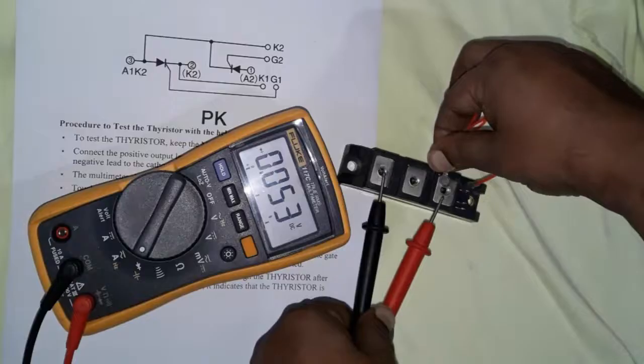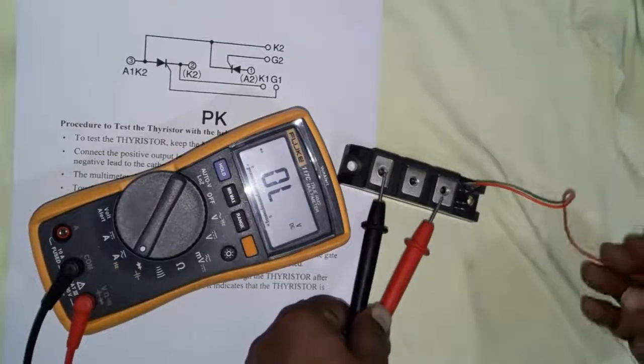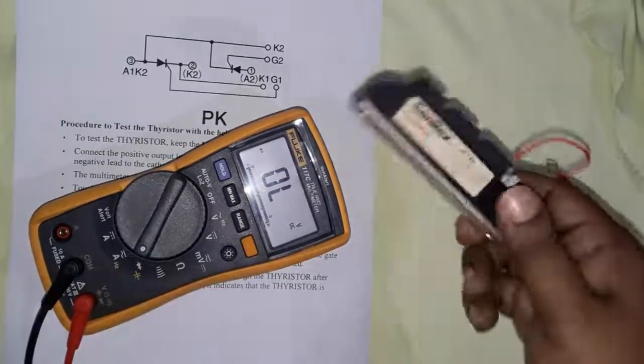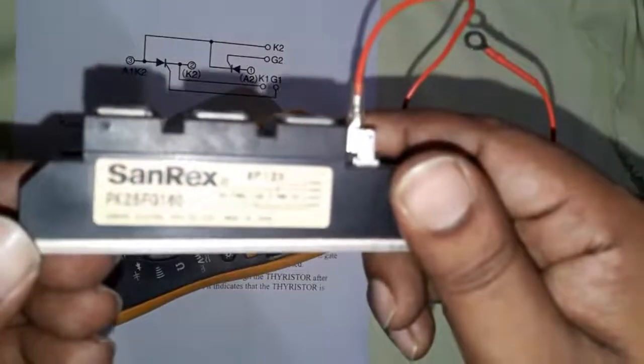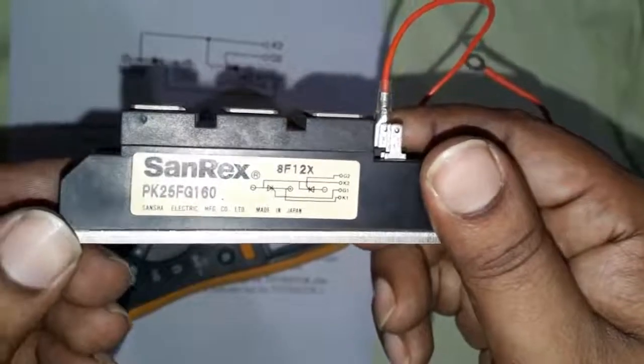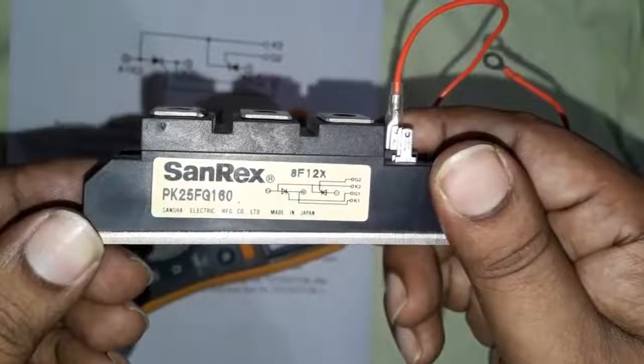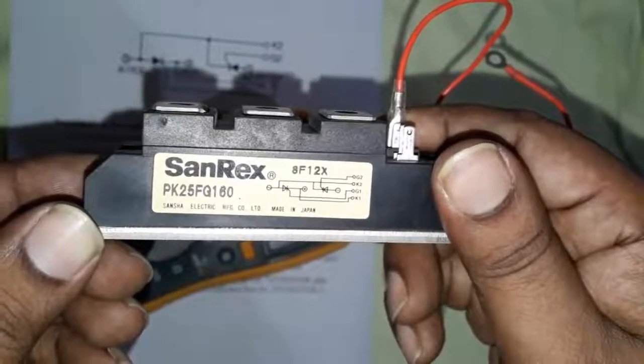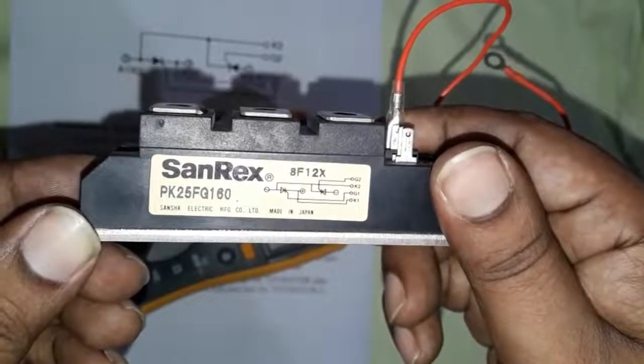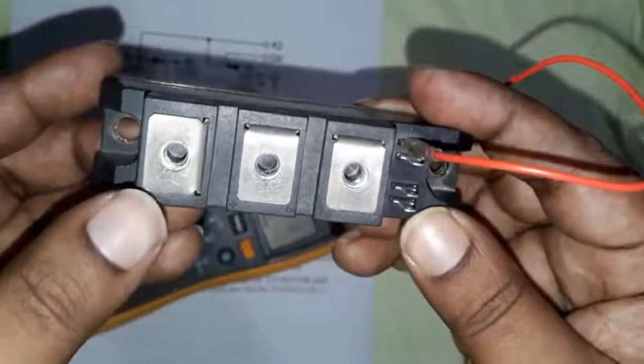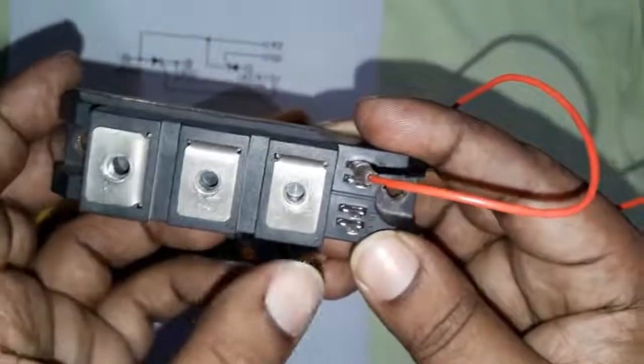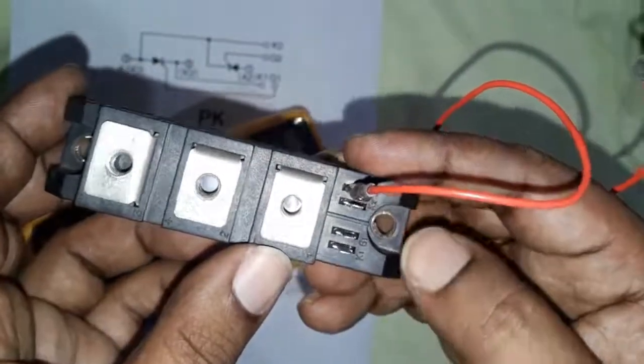This is how we can check a thyristor or SCR, whether it's a good thyristor or a failed one. This is the Sunrex PK25FG160 dual thyristor, which contains two thyristors.